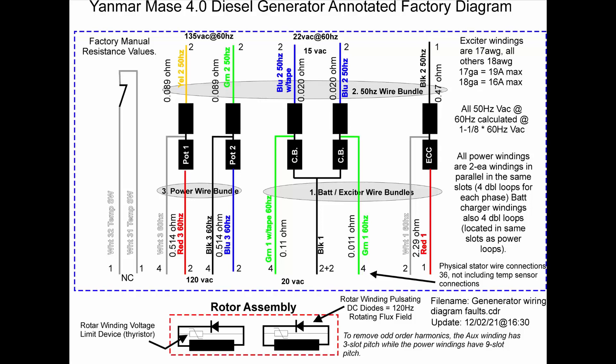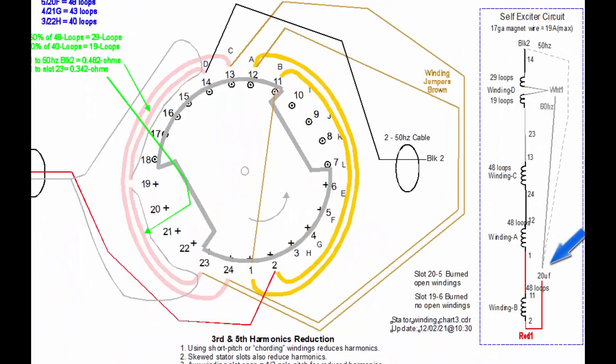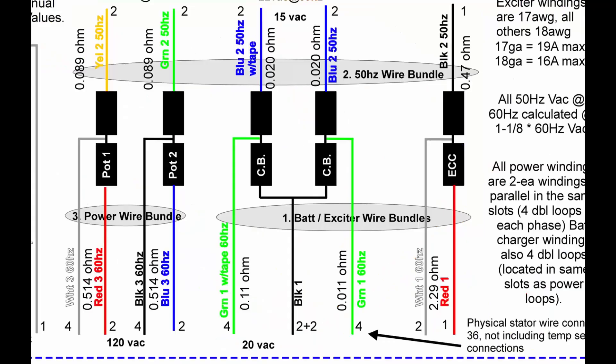This generator is unique in several ways. The first way is that it's a self-excited generator. There's no brushes, there's no slip rings, nothing. The way it works is it has a capacitor across the exciter winding and that builds on the residual magnetic fields left in the iron core when you start up the generator.